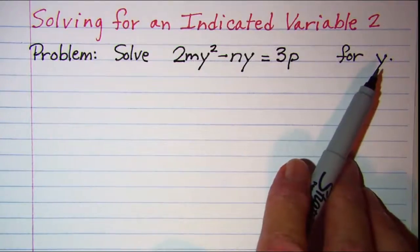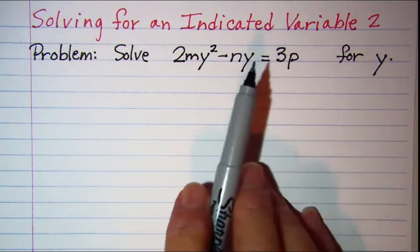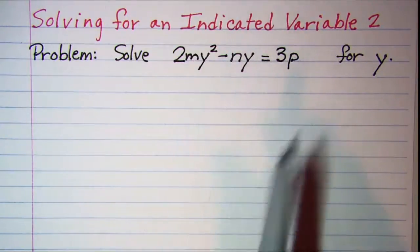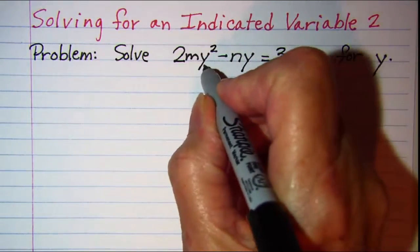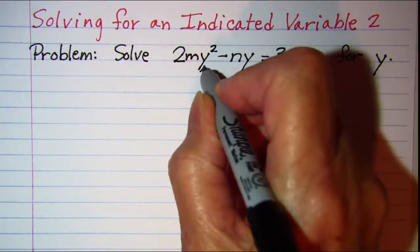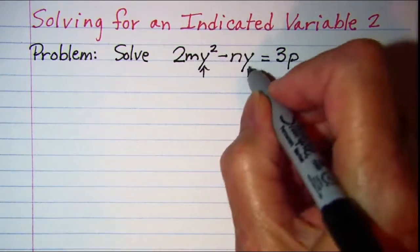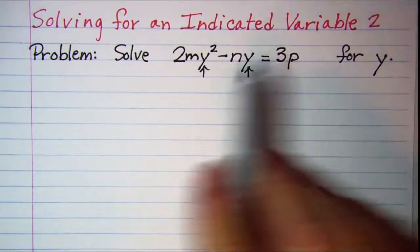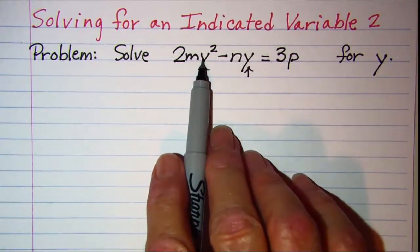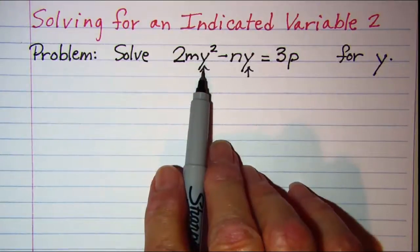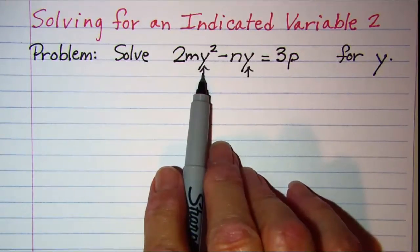Our first step when solving for a specific variable is to locate the variable. Now in this problem notice we have the variable that we're solving for in two places and this one is a second degree. So we're going to need to use one of our processes to solve a quadratic.